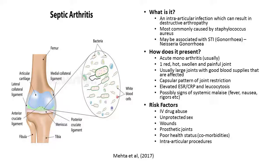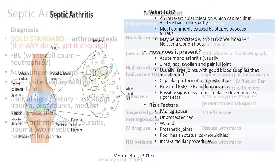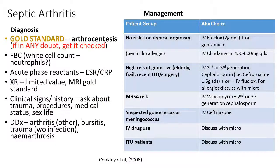Risk factors for septic arthritis include IV drug abuse, unprotected sex, wounds, prosthetic joints, poor health status, and intra-articular procedures. The gold standard for diagnosis is arthrocentesis. If in any doubt about a red-hot swollen joint, this must be carried out. Look at white blood cells, acute phase reactants, and MRI as the gold standard imaging. Clinical history should ask about trauma, procedures, medical status, and sexual history, alongside differential diagnosis of other inflammatory and non-inflammatory presentations.